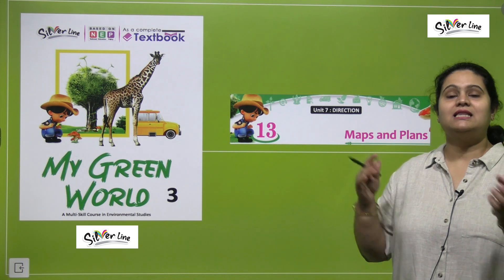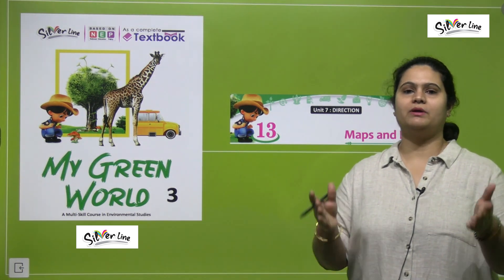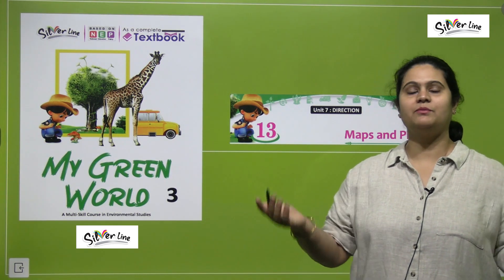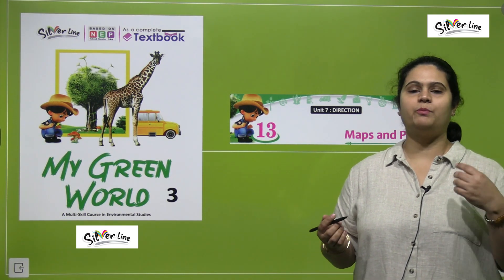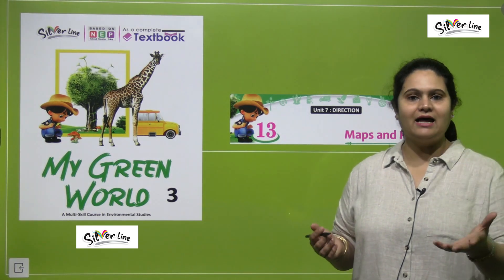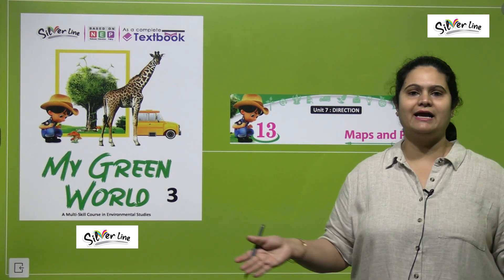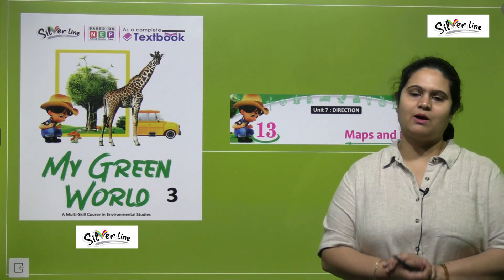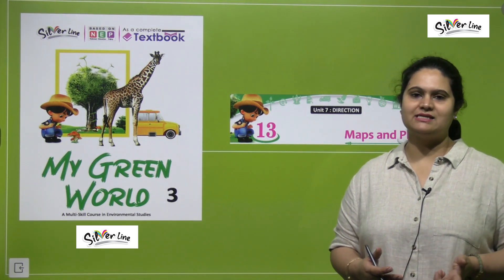Direction means Disha — aapko pata hoona chahiyeh agar aap kisi jagah par ja rahe hai. Aaj kal hum kya karte hai? If we have to go to a new place, we open Google Maps. We need to know the meaning of left, right, and straight. So all that we are going to study in this chapter.